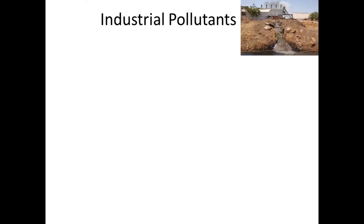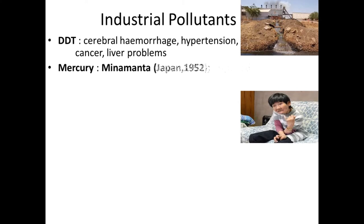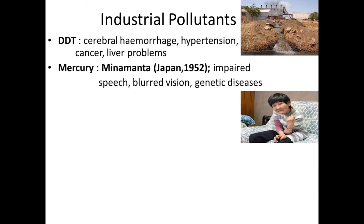This slide shows the effect of industrial pollutants on the quality of water. DDT causes cerebral hemorrhage, hypertension, cancer, and liver problems. Mercury causes Minamata disease, whose symptoms are impaired speech, blurred vision, and genetic diseases. This disease first occurred in 1952 in Japan.